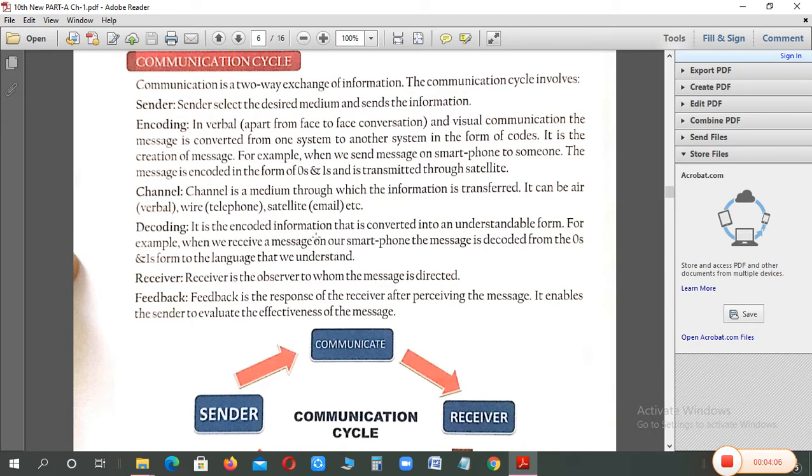Decoding, it is the encoded information that is converted into an understandable form. Dekho, yahan pe code mein convert hota thi, ab decode mein, wo same to same, usi language mein convert hota hai, jis mein aapko samaj mein aati hai. For example, when we receive a message on our smartphone, the message is decoded from 01, from to the language that we understand. So, woh apne aap hi 01 se, kis language mein convert hota hai, jisse aapne English mein type kiya, to English mein hota hai. So, encoding or decoding, dhyan se karna hai, encoding, woh message aap 01 mein code hota hai, and jab receiver ke paas pahunchne wala hoga, usse pehle, woh automatically decode hoga, 01 se proper, aapki language mein hota hai.